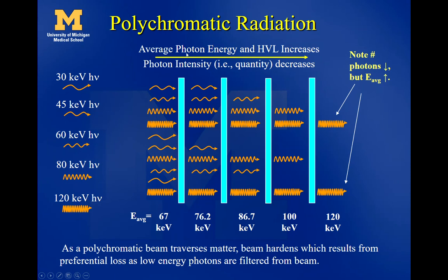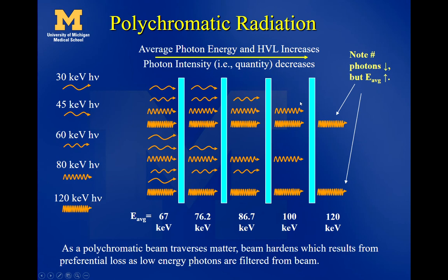In real life we mostly do not have monochromatic x-ray beams. Our beams are comprised of photons of many energies — say 30, 45, 60, 80, and 120 keV and everything in between. Importantly, the attenuation coefficient is higher for the lower energies (30, 45 keV) than for higher energies (80, 120 keV). So the lower-energy x-rays get attenuated more quickly, and more of the high-energy ones get through.